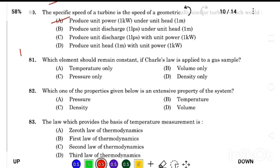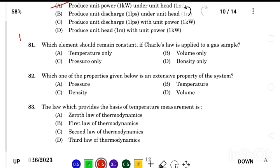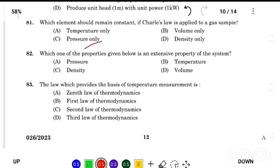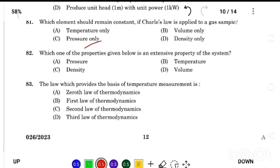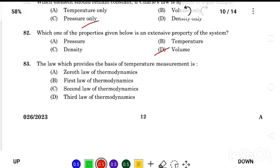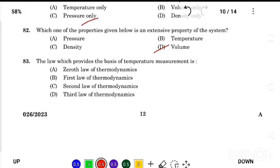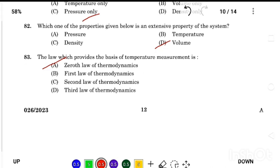Which element should remain constant if Charles law applied to a gas sample? Answer Option C, pressure only. Which one of the properties given below is an extensive property of the system? Answer Option D, volume. The law which provides the basis of temperature measurement is Answer Option A, zeroth law of thermodynamics.